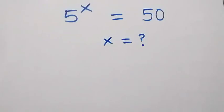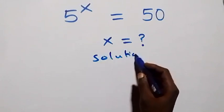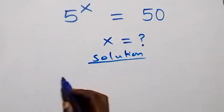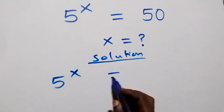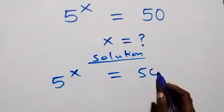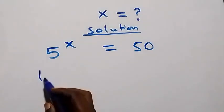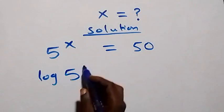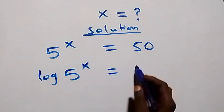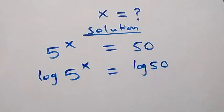Hello, you are welcome. How to solve this nice exponential equation. From what is given here, which is five raised to power x equals to 50, let's take the log on both sides and we have log of five raised to power x equals to log 50.